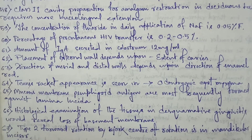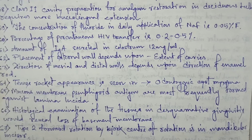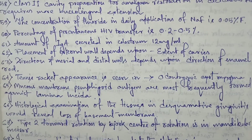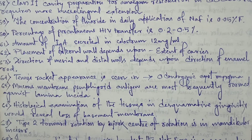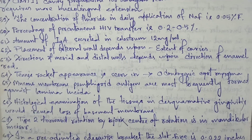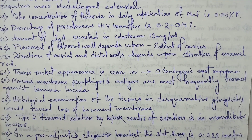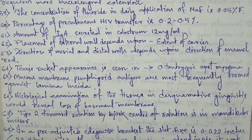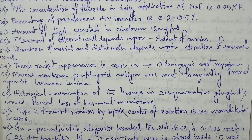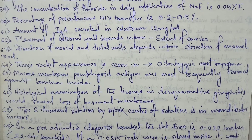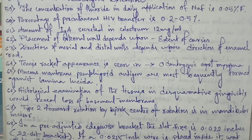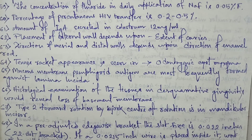Tennis racket appearance is seen in odontogenic myxoma. Mucous membrane pemphigoid antigen are most frequently formed against lamina lucida. Histological examination of tissues in desquamative gingivitis would reveal loss of basement membrane. Type 2 forward rotation by Bjork.